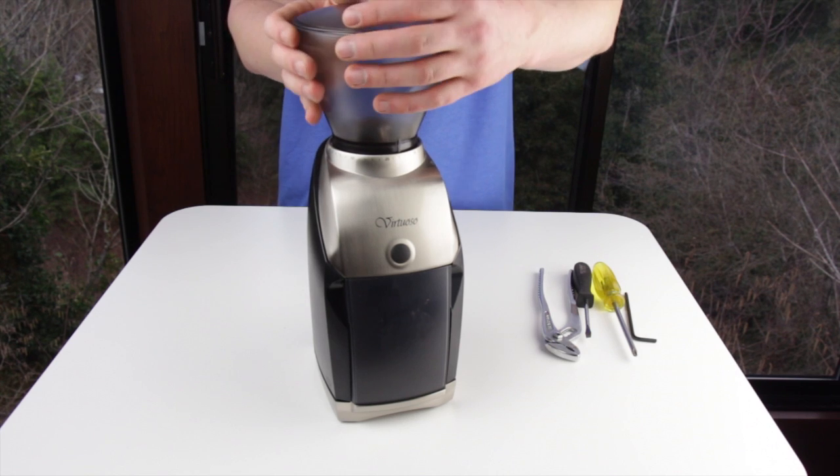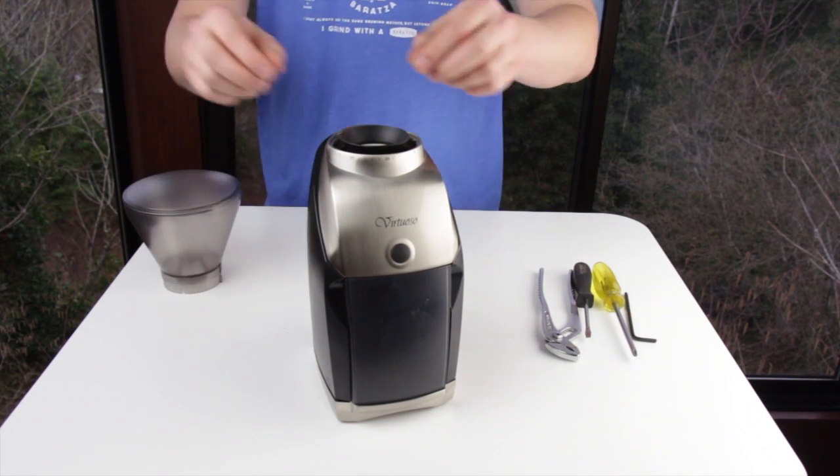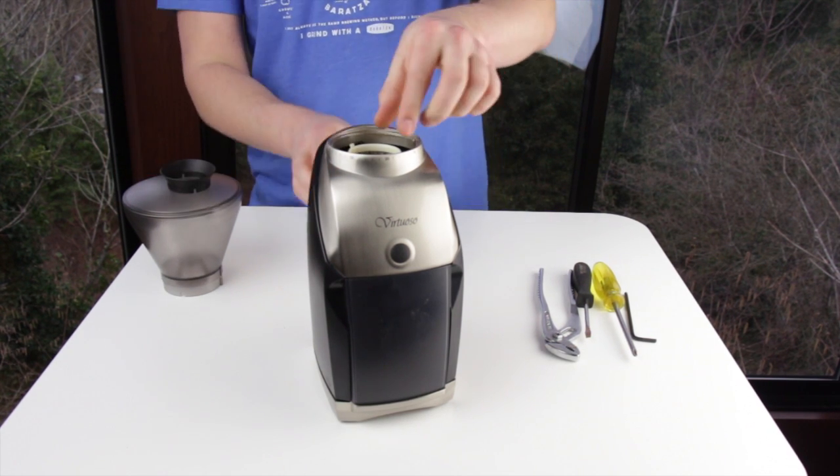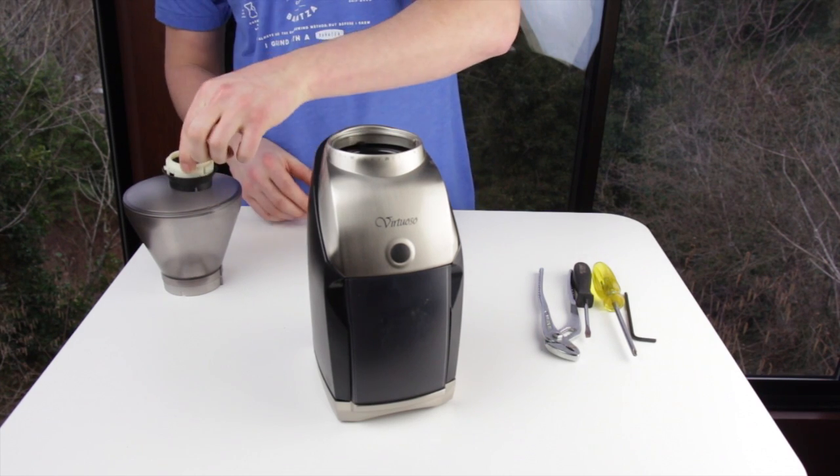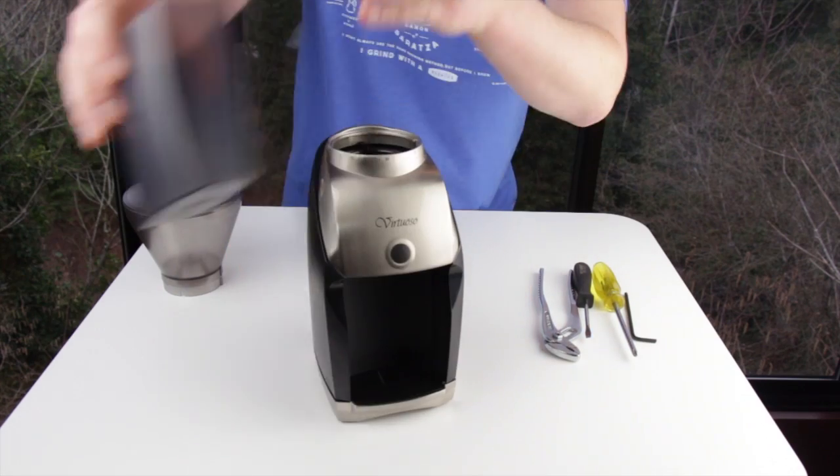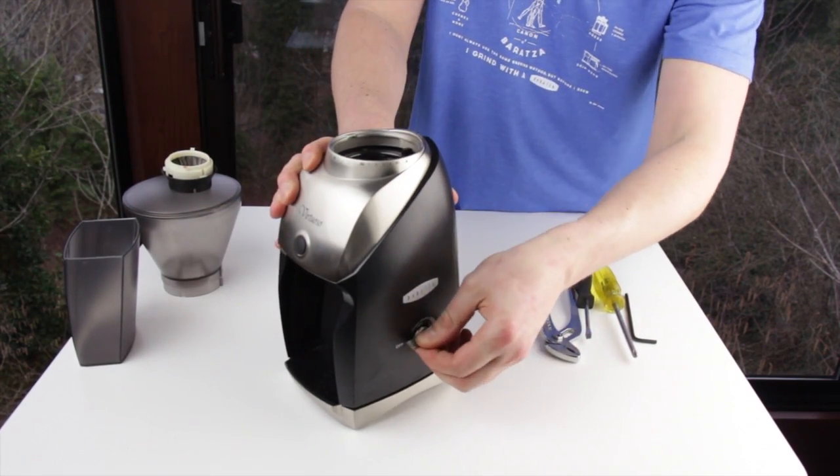Rotate your hopper counterclockwise until it stops and then lift it off to remove it. Remove your rubber gasket. Remove your ring burr. It should lift out of the grinder. Remove the grounds bin from the machine. Remove the knob by pulling on it and wiggling.